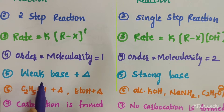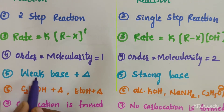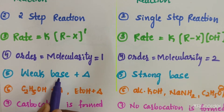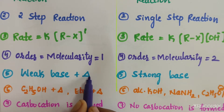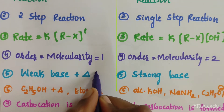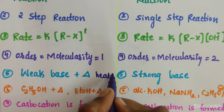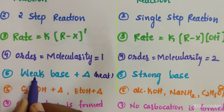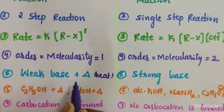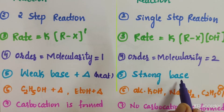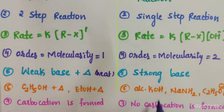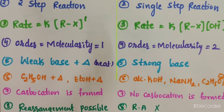For E1 elimination reaction, we require a weak base and heating conditions — this symbol indicates the heating condition. With a weak base under heating condition, E1 elimination reaction occurs. For E2 elimination reaction, a strong base is required.